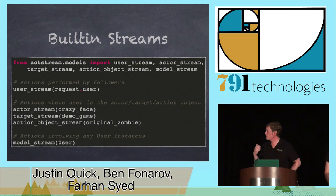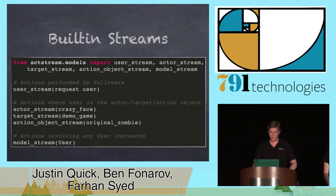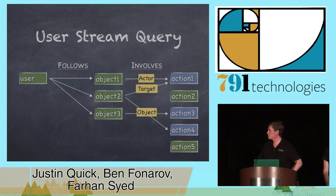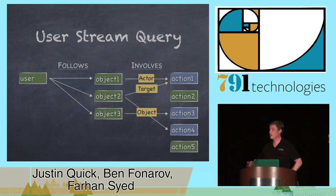There are also streams. It comes with a few built-in streams, with user_stream being the most important one. That takes a user, finds their followers, and then gives you actions that those followers have done — like your main dashboard on GitHub, Facebook, or Twitter. There are similar others for actor, target, and action object that do a similar lookup based on whatever context the given object is in. Actor_stream on 'crazy face' will show me all the actions where crazy face was the actor. Model_stream will show you any and all actions that involve a particular content type. And you can also filter the user stream down by relationship — by default it returns everything, but you can customize that.